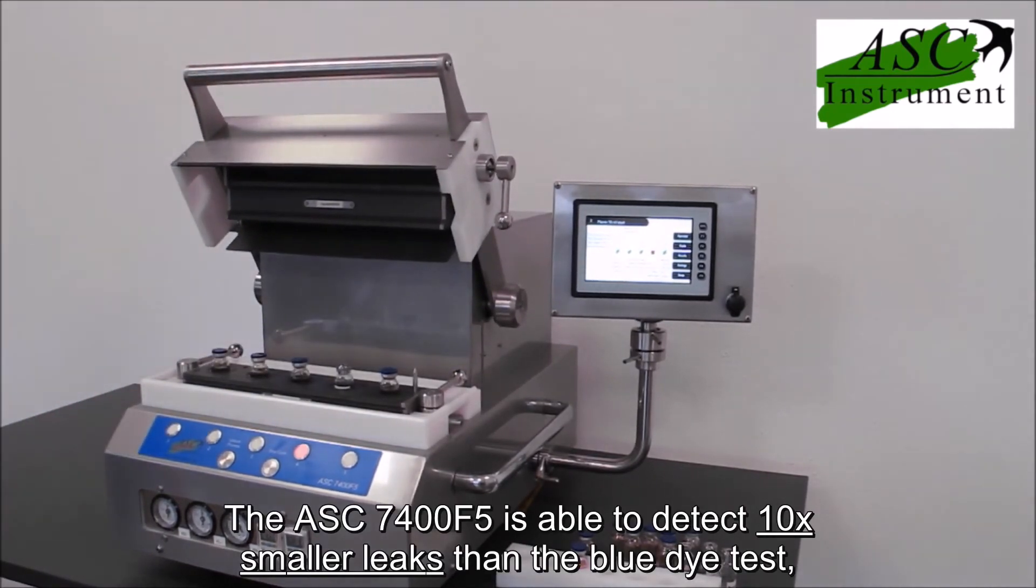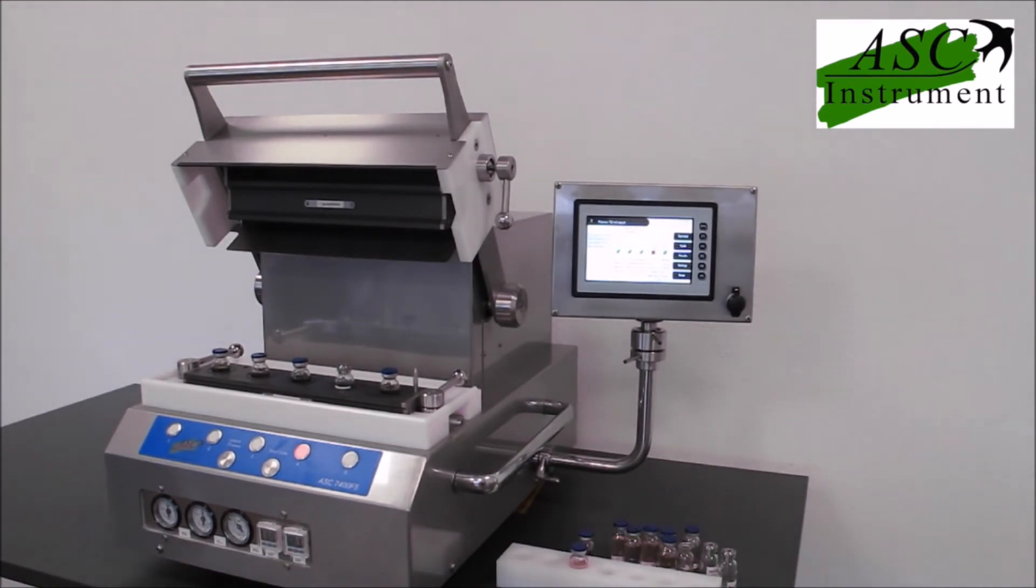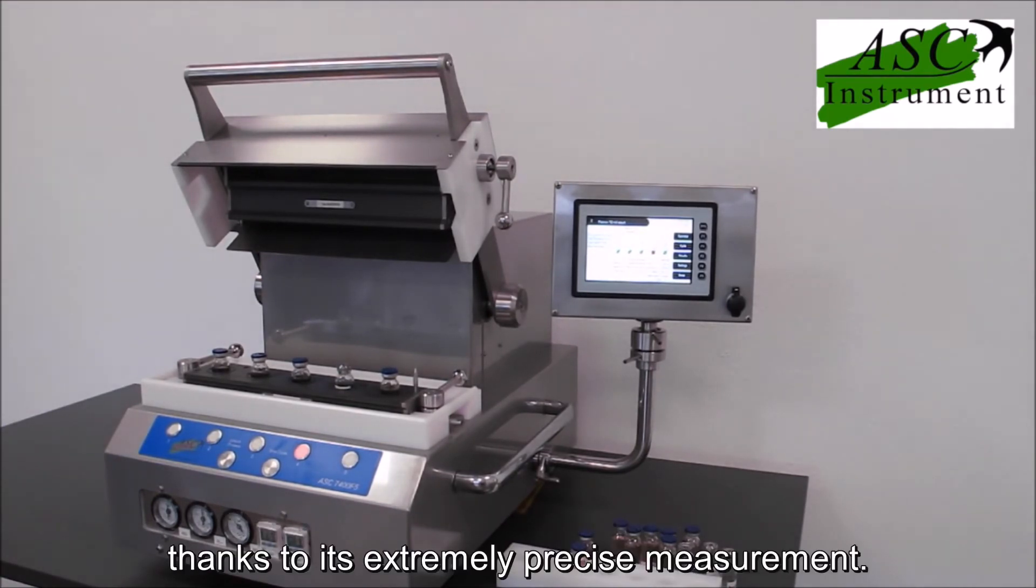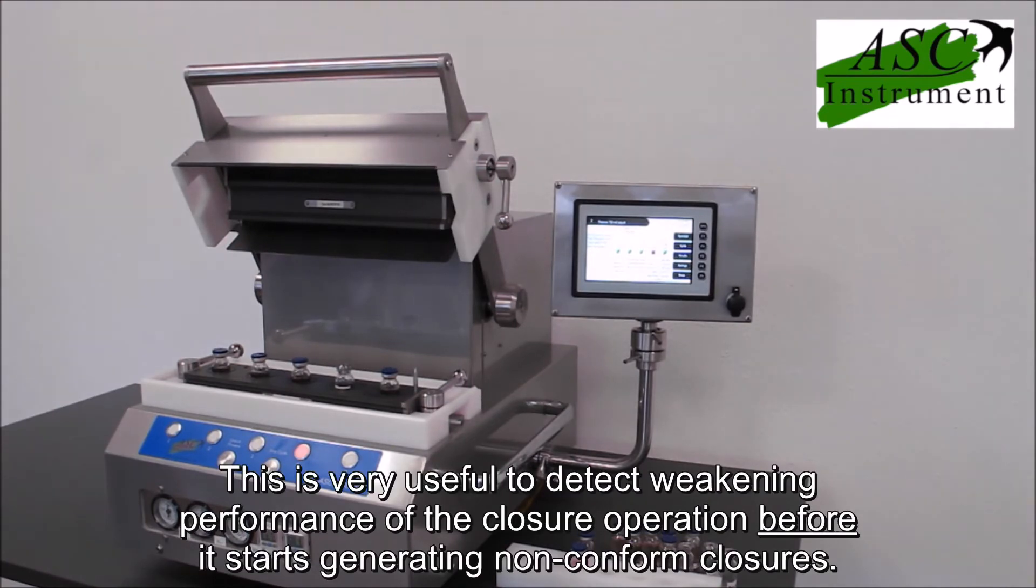The ASC7400F5 is able to detect 10 times smaller leaks than the blue dye test, thanks to its extremely precise measurement. This is very useful to detect weakening performance of the closure operation before it starts generating non-conform closures.